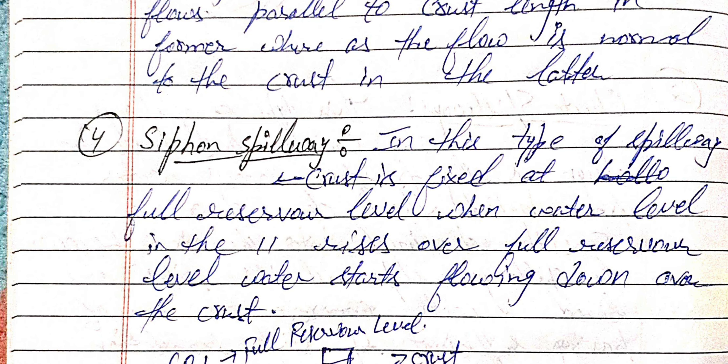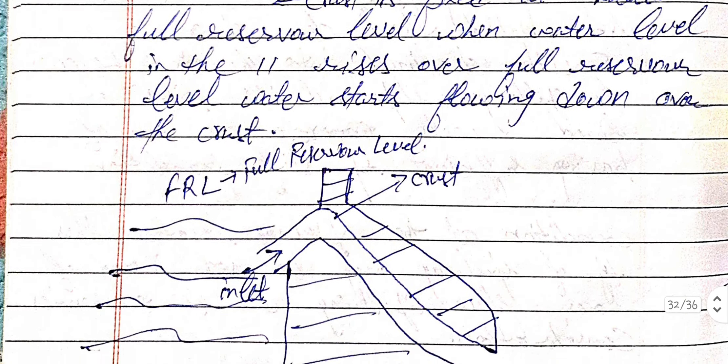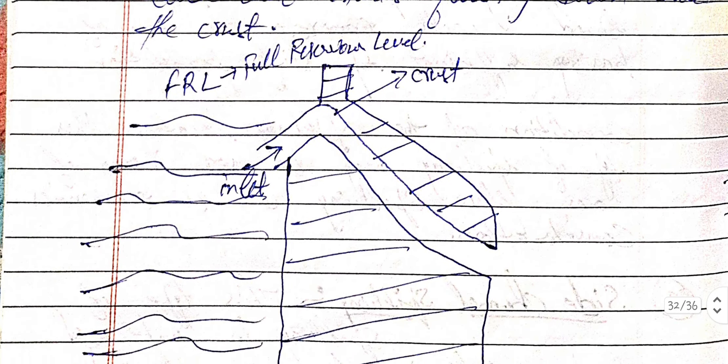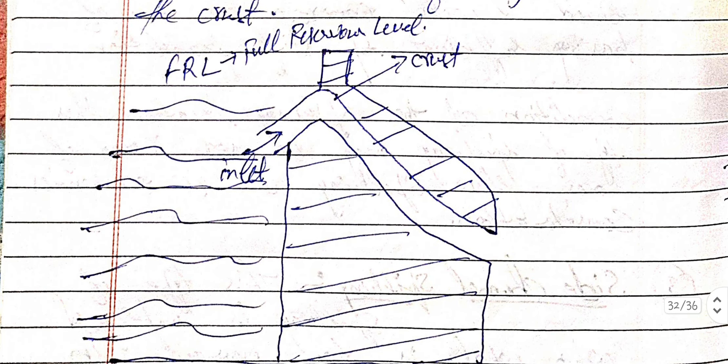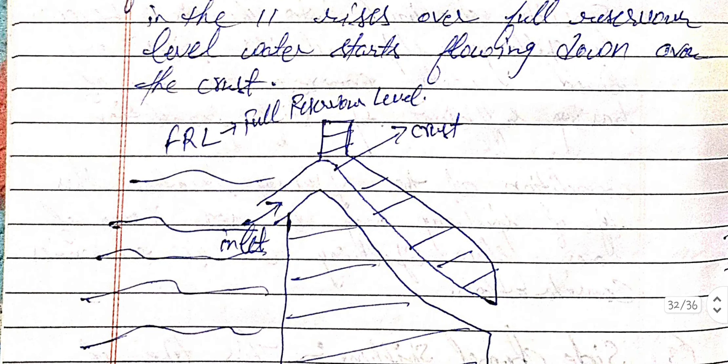Next is the siphon spillway. In this type, the crest is fixed at the full reservoir level. When the water level in the reservoir rises above the full reservoir level, water starts flowing down over the crest. This is the diagram for the siphon spillway.